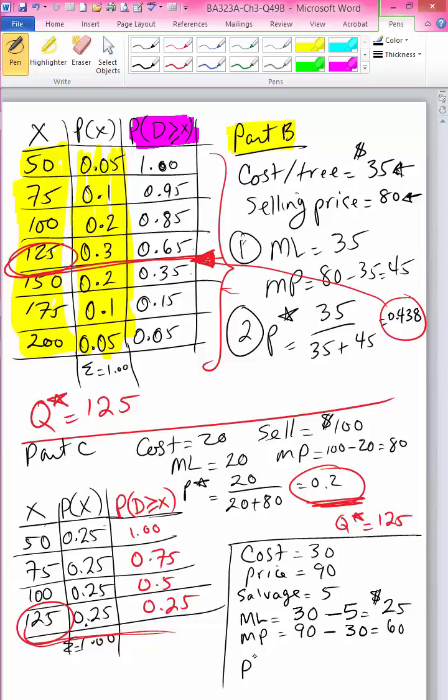So now my critical probability will be 25 divided by 25 plus 60, which is 25 over 85, which is 0.29.